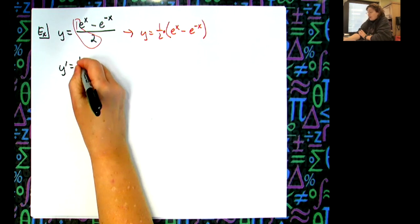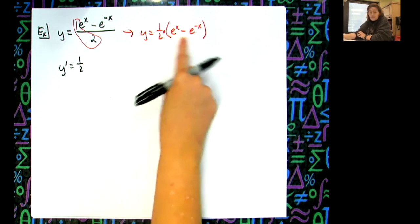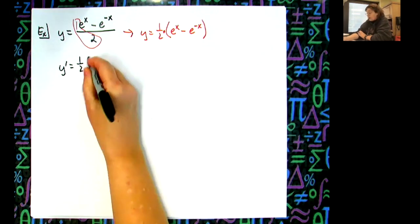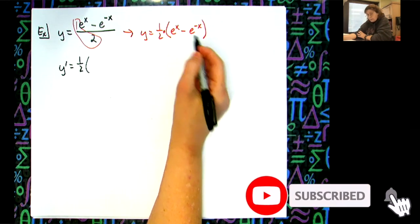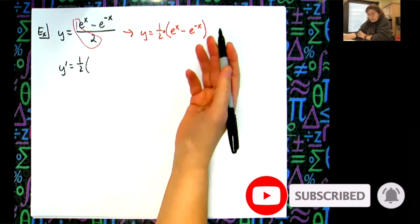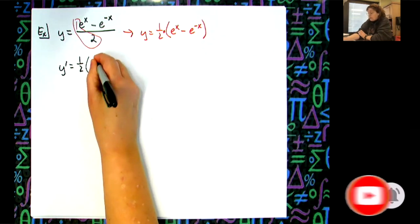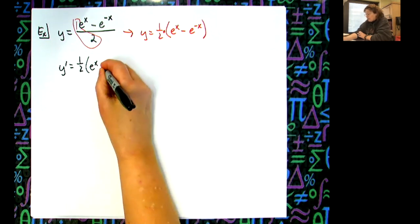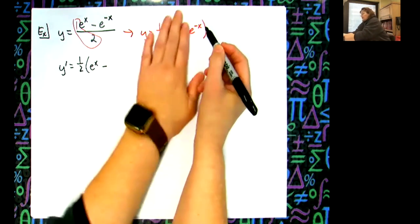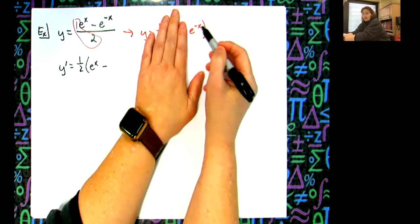The derivative of e to the x: e to the u, u prime - my u being x, derivative of x is one, so I have e to the x. Now I've already got a minus sign here. Now if I take the derivative of e to the negative x...